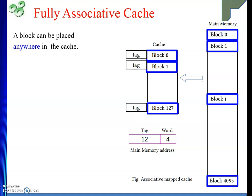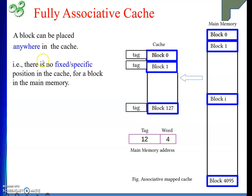Wherever you get a place, you take the position. So there is no specific or fixed position in the cache for a block of main memory. The beauty of this method will be, we are not going to send a block from the cache memory — that means we are not going to call a replacement algorithm until and unless the cache is completely full.